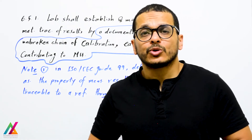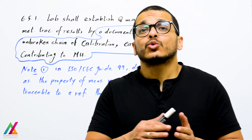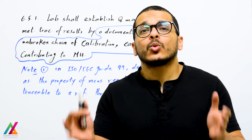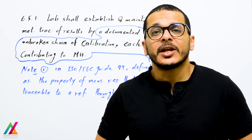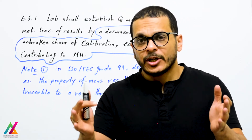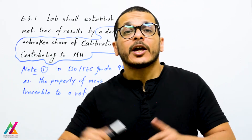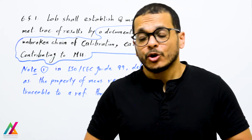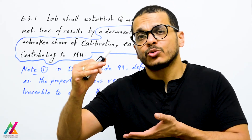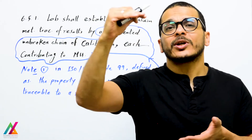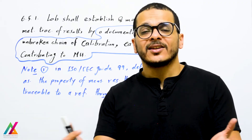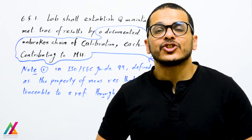To ensure metrological traceability of results to SI units, all equipment inside the lab shall be calibrated with a specific calibrator, which shall be calibrated by a competent calibration lab, which is traceable to the National Metrological Institute, which is traceable to SI units. This is the documented unbroken chain of calibration.